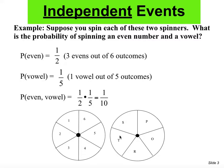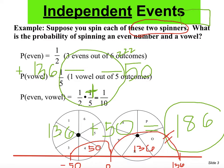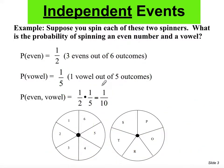So what is the probability of getting an even number on the first spinner and a vowel on the other spinner — both happening at the same time? Just multiply: the probability of getting an even number is one half, times the probability of getting a vowel, which is one fifth. When you multiply fractions, you multiply the numbers straight across: one times one equals one, and two times five equals ten. So the final answer is one out of ten.